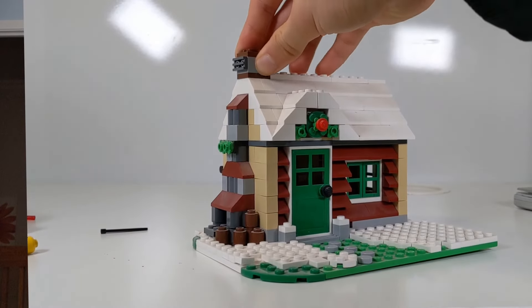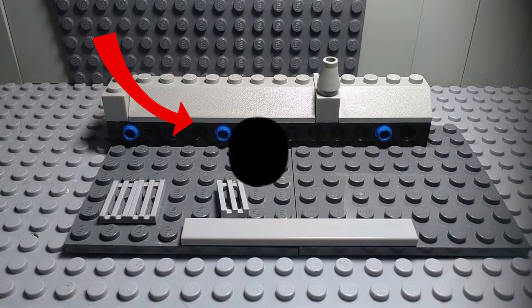And the most obvious scenario to have a lot of extra pieces would be if you built an alternate build in a three-in-one set. At this point you're pretty familiar with how extra pieces work, but did you know that LEGO sets can have extra stickers?